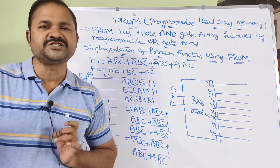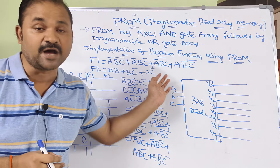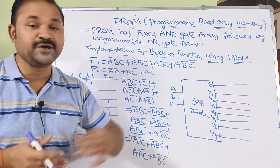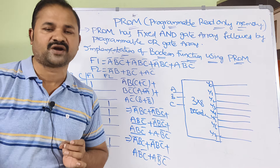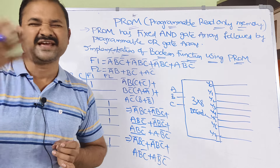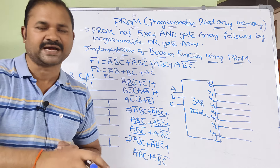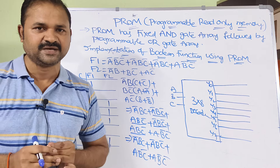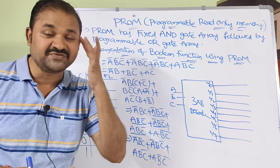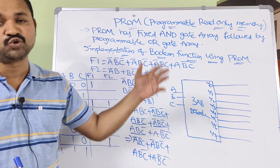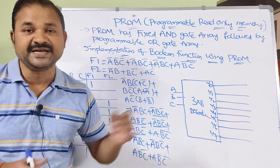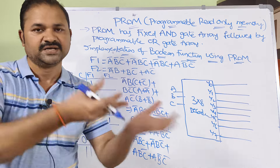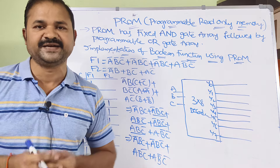In examinations, questions will mainly be given on examples — implementation of a full adder using PROM, or half adder, half subtractor, full subtractor, or any number conversion system like binary to BCD, BCD to gray, or any conversion. A truth table or boolean function will be given. For that truth table we have to find the minterms, and for those minterms we will design the PROM.